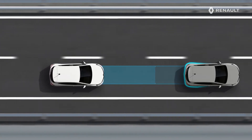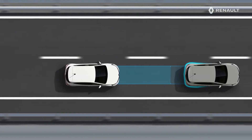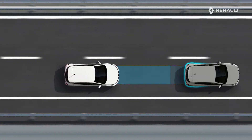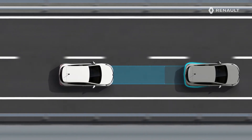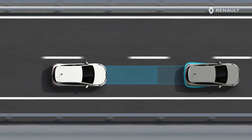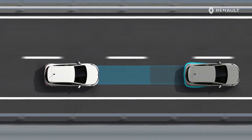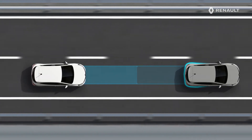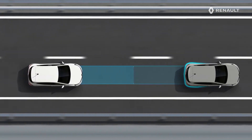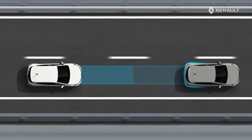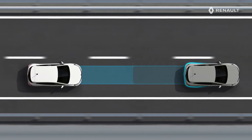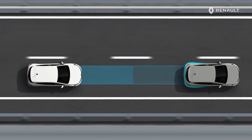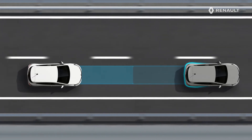If the tracking distance decreases and is no longer sufficient, your vehicle will slow down without any action on your part on the brake pedal. When the tracking distance becomes sufficient again, your vehicle will reset itself to the cruise speed that you had defined.